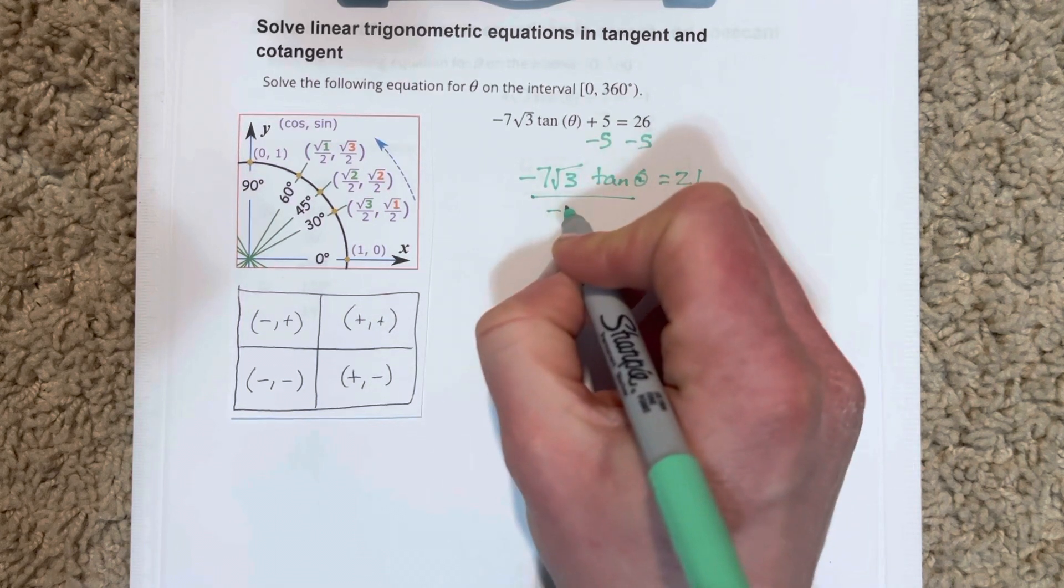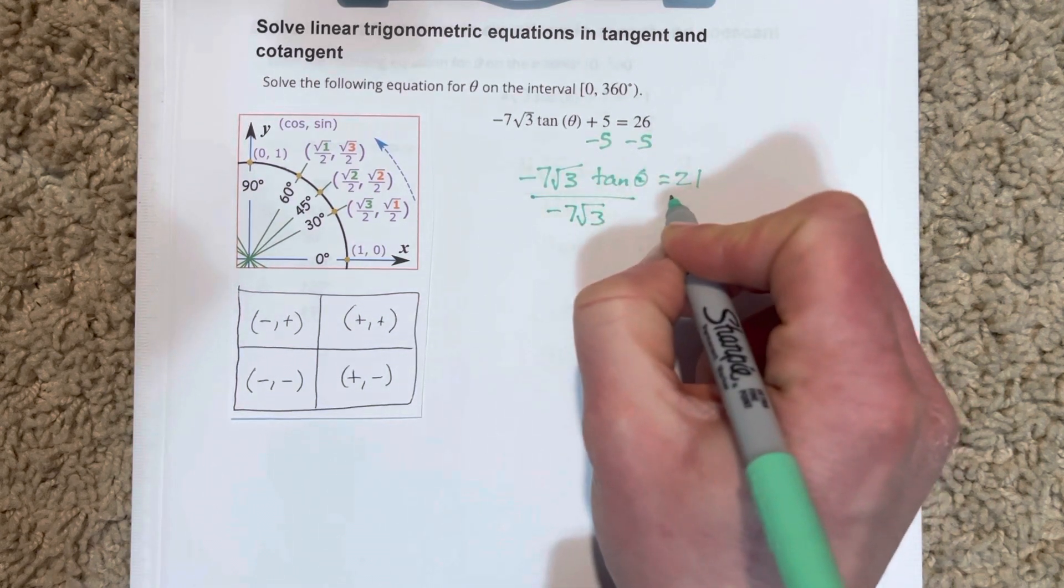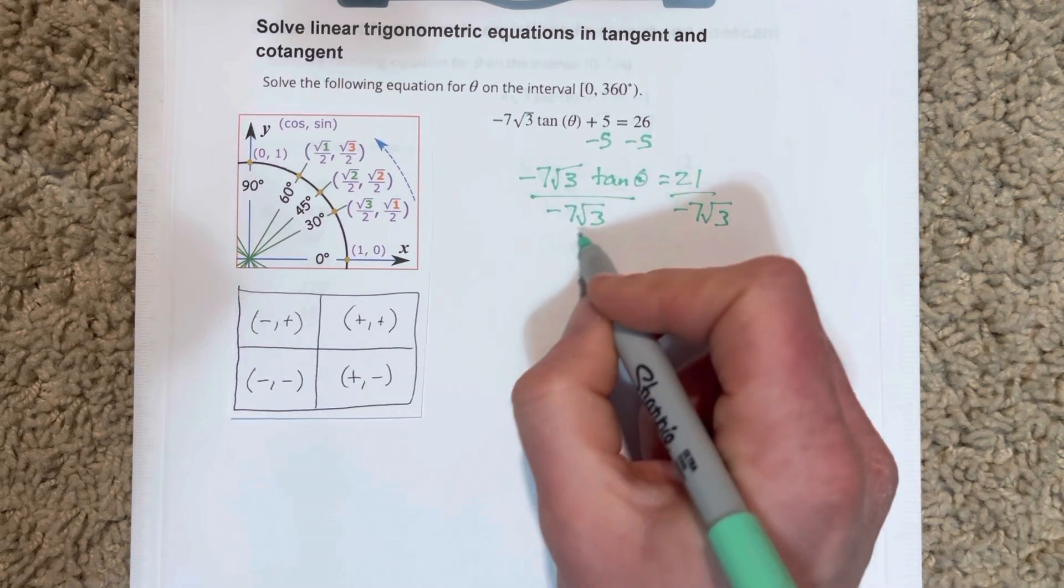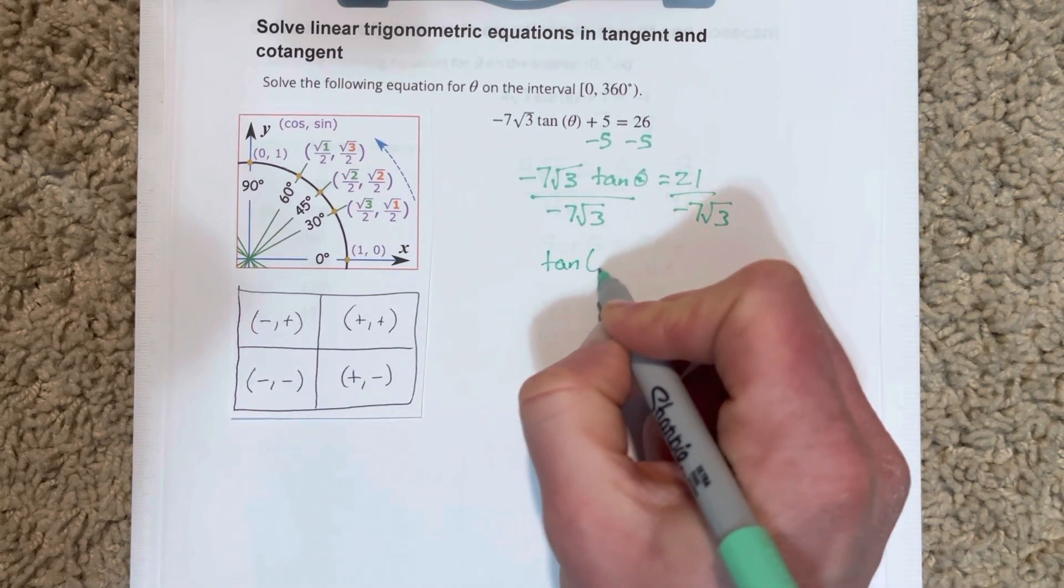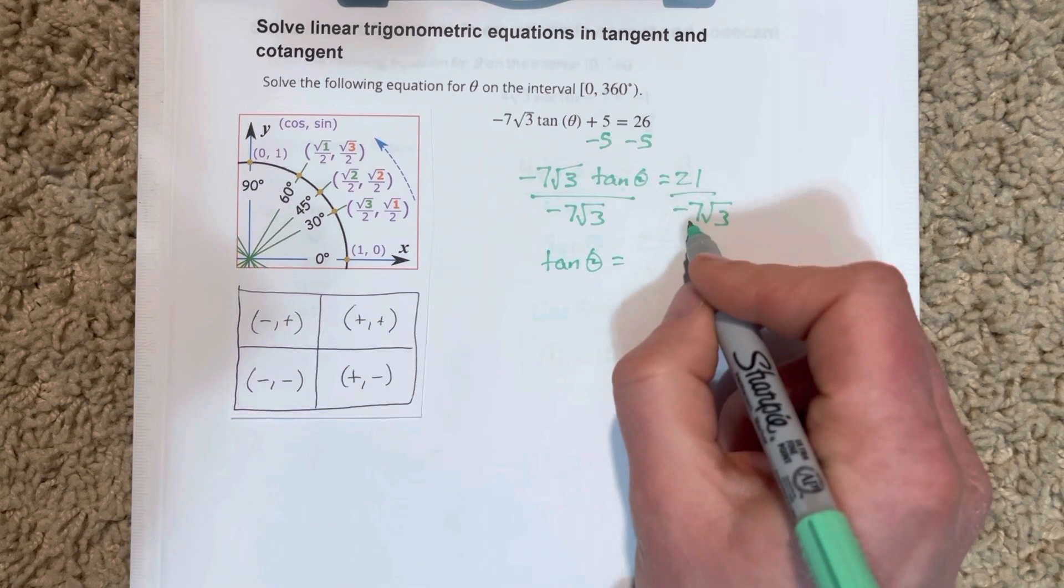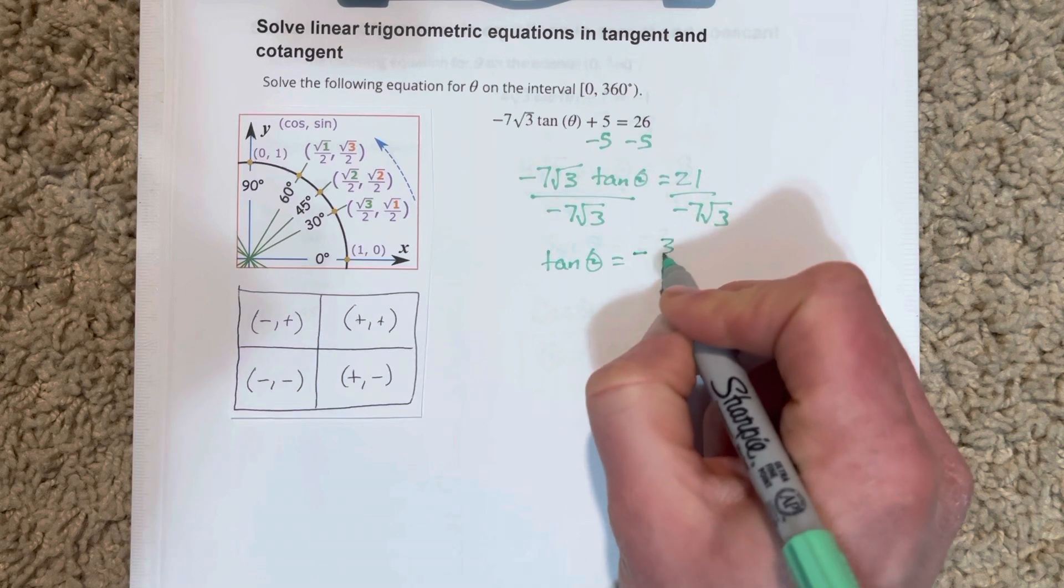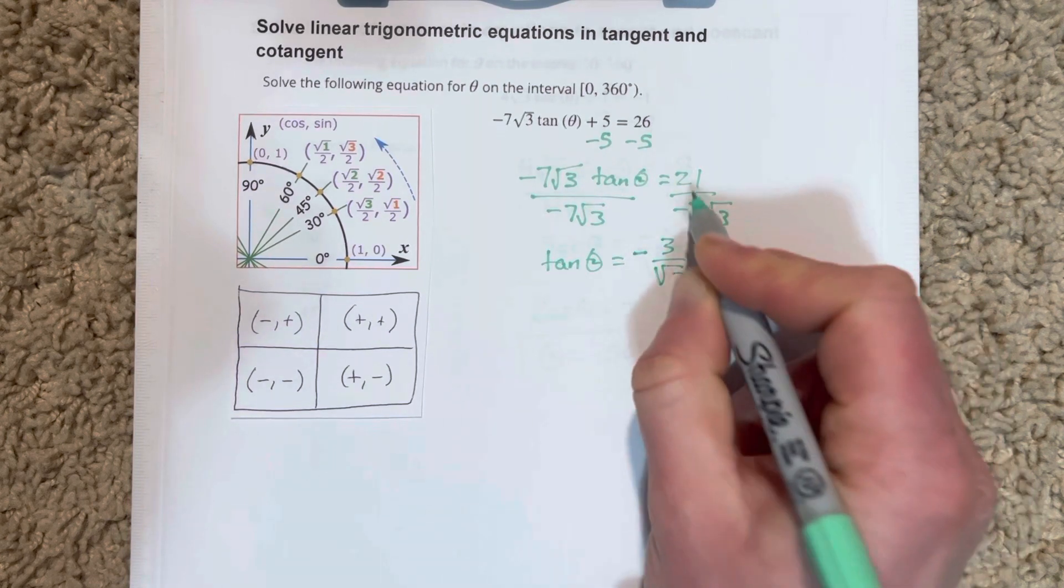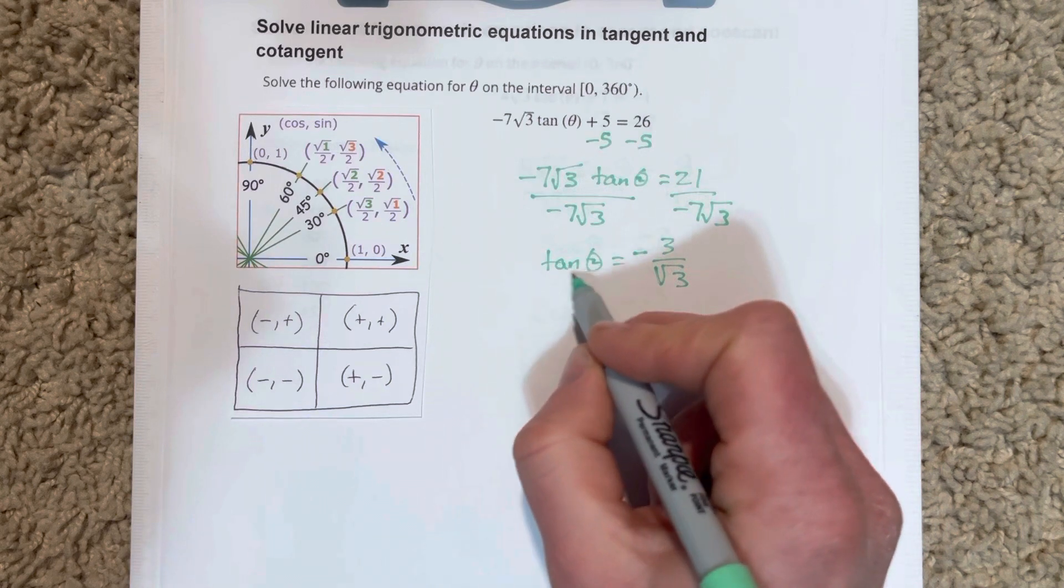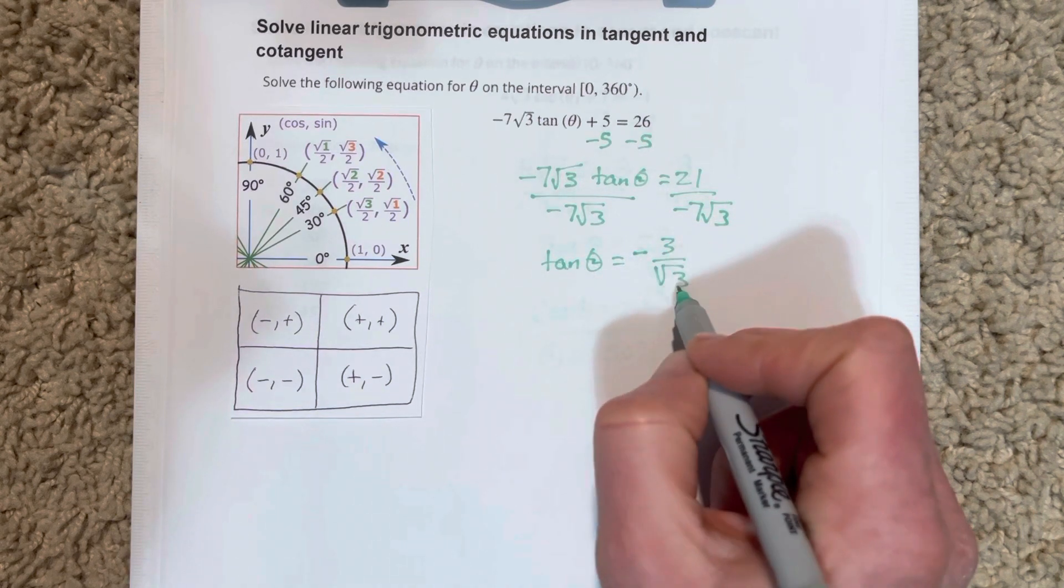Then we're going to divide each side by negative 7 root 3. We end up with tangent theta equals, when I divide 21 by negative 7, that's negative 3 over root 3, because 21 divided by 7 is 3. So tan theta equals negative 3 over root 3.